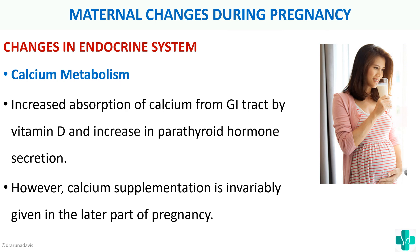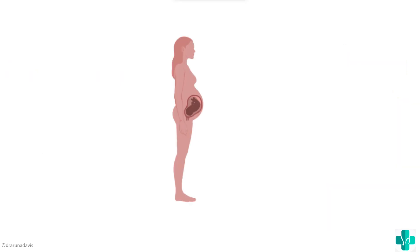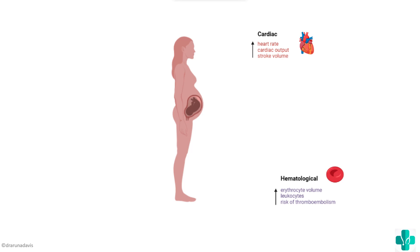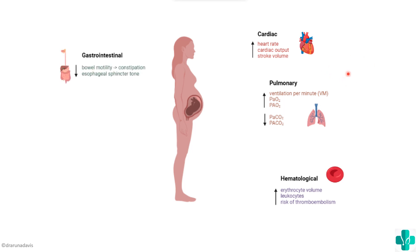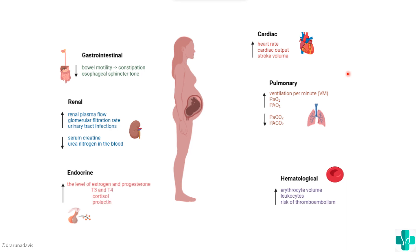As a recap: hematological changes include increased erythrocyte volume, increased leukocytes, and increased risk for thromboembolism. Cardiac changes include increased heart rate, cardiac output, stroke volume, increased systolic BP, and decreased diastolic BP. Pulmonary changes include increased minute ventilation, with changes in residual, expiratory, and inspiratory reserve volumes. GI changes include decreased motility and constipation. Renal: increased GFR. Endocrine: changes in thyroid, cortisol, and prolactin. In the musculoskeletal system, there is also increased lumbar lordosis and joint laxity.